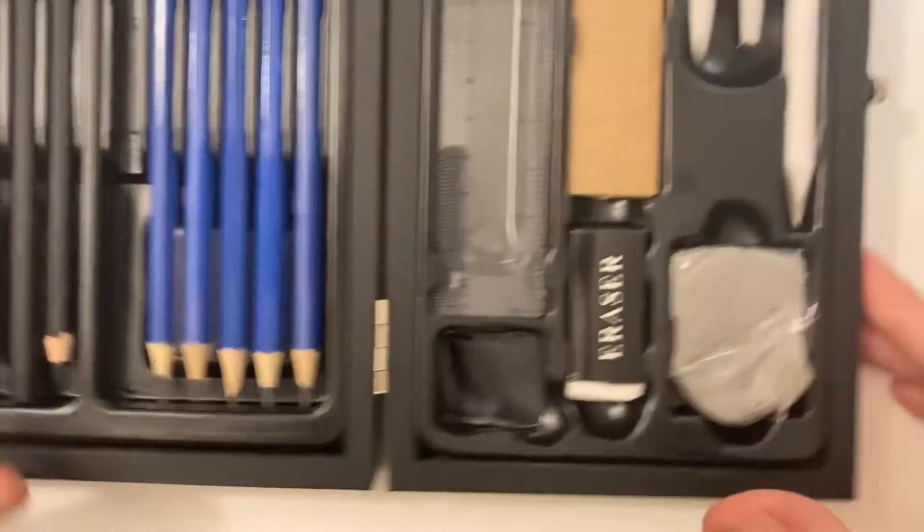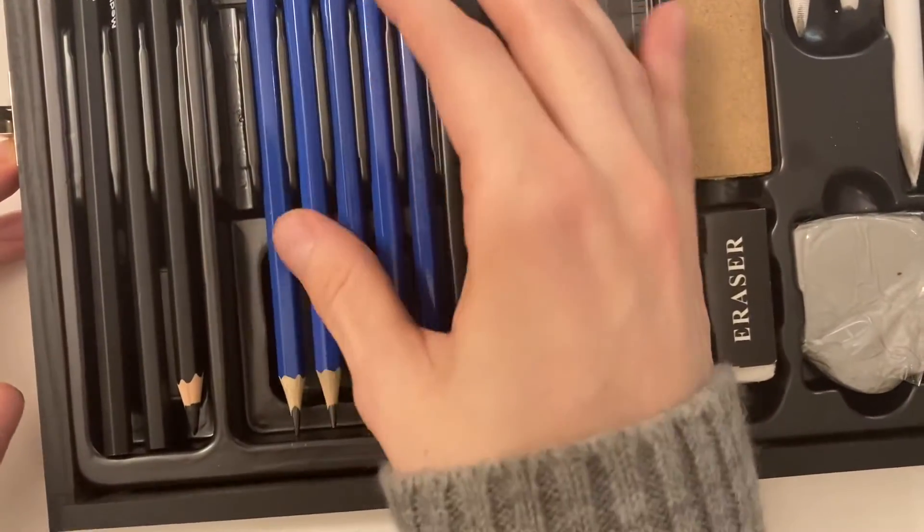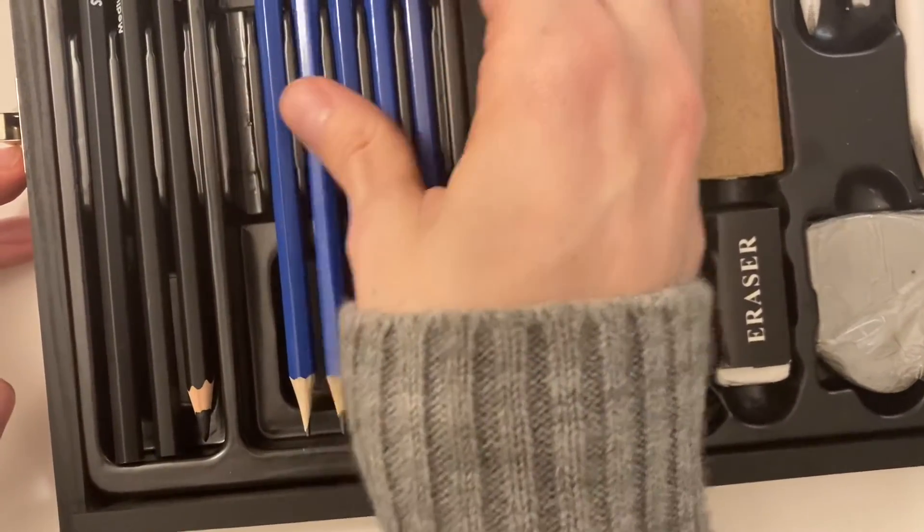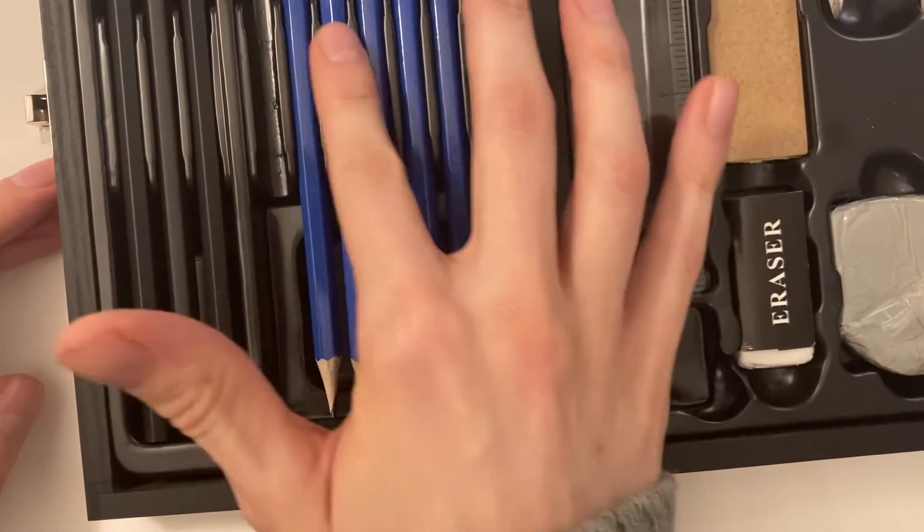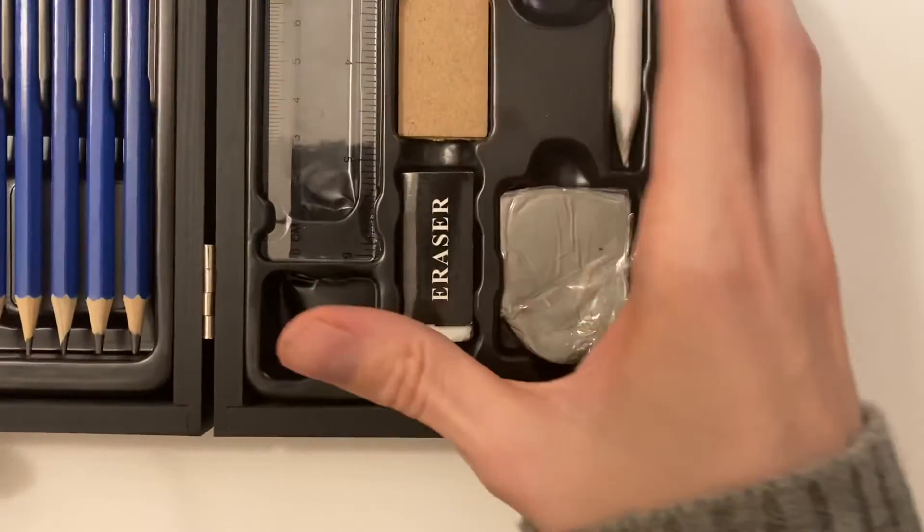So I have these things. I don't know what they do. I think they're like different sizes. These are the dark ones and these are the normal pencils, I'm pretty sure. I have some other stuff here. So I'm going to show you how to draw Mario.